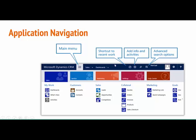Here you can see the different parts of the Microsoft Dynamics CRM application navigation. These three lines is the main menu button. Wherever you are working on the application, once you click on this button you will go back to the home page. Here we have a shortcut to recent work — this circle button is to see the recent work, showing all the records like accounts which you have worked on recently.